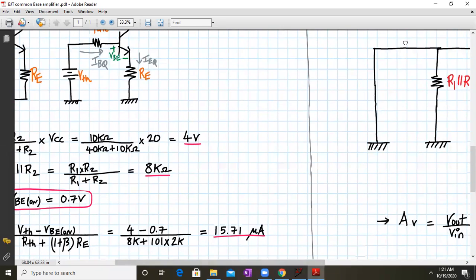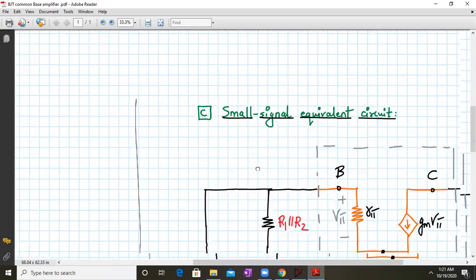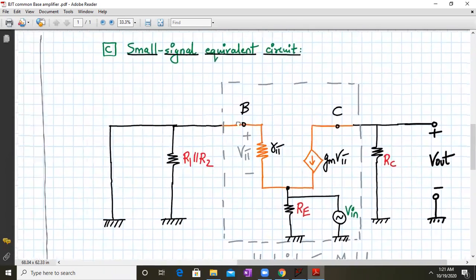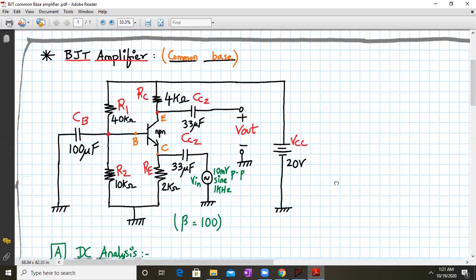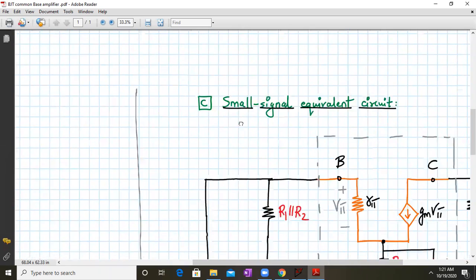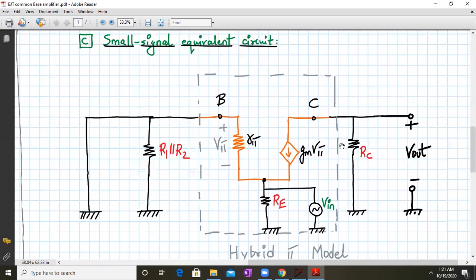So after you get the small signal parameters, now is the time to draw the small signal equivalent circuit. For the small signal mid frequency equivalent circuit, we assume that all the capacitors behave as a short circuit. So this is my small signal equivalent circuit.